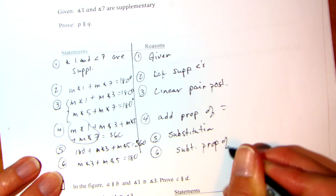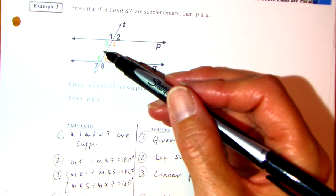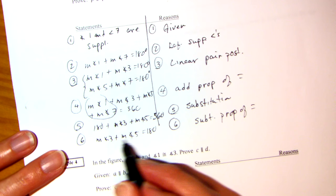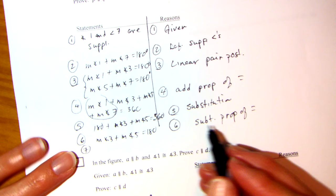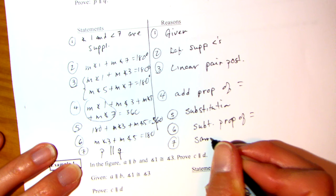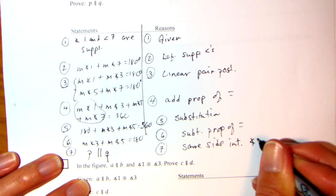Now what do I have? Angles 3 and 5. I know about 3 and 5 — I did not know about 1 and 7. But 3 and 5 are called same side interior. If that equals 180, then the lines are parallel, because of the same side interior angles converse. That's the converse of it.